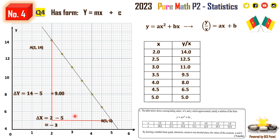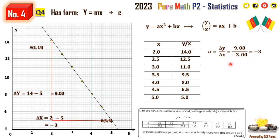From the form mx plus c, we know that change in y over change in x gives the value of a. So a equals 9 over negative 3, which is negative 3. The answer is negative because this is a negative slope — it goes from top left to bottom right.